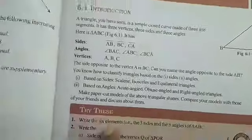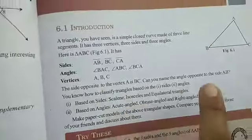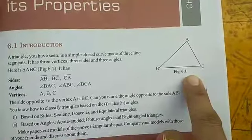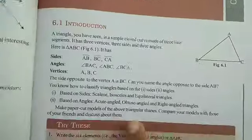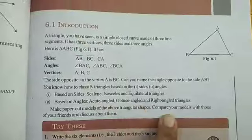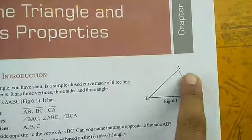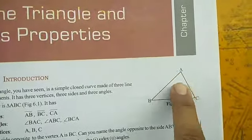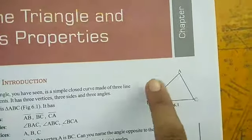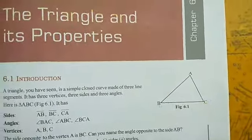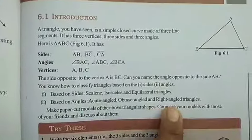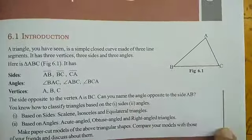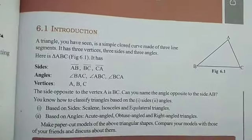Based on angles, we have acute-angled, obtuse-angled, and right-angled triangles. In an acute triangle, all three angles are between 0° and 90°. In an obtuse triangle, any one angle is greater than 90° and less than 180°. In a right-angled triangle, one angle is exactly 90°.